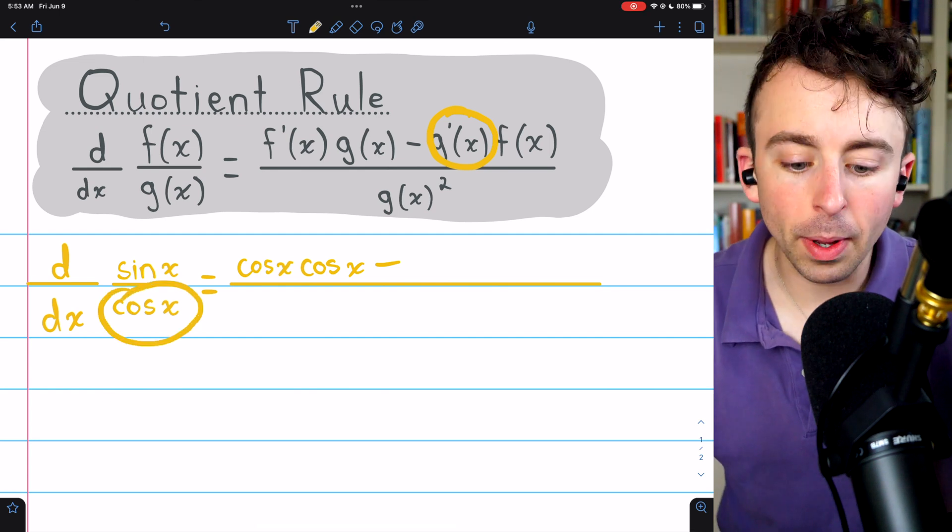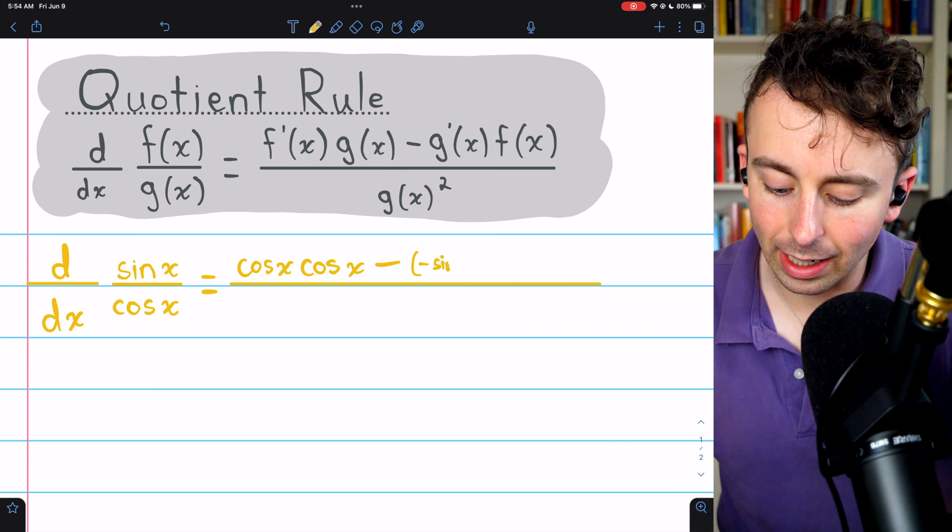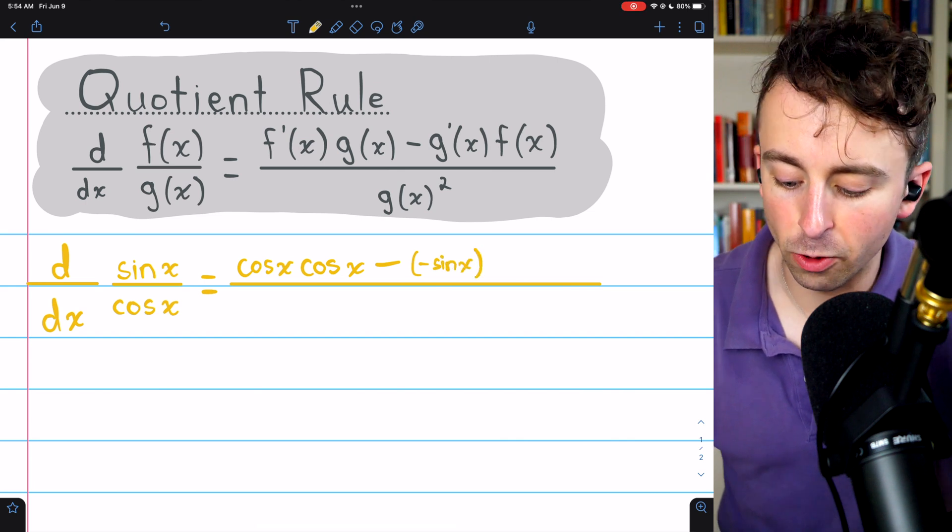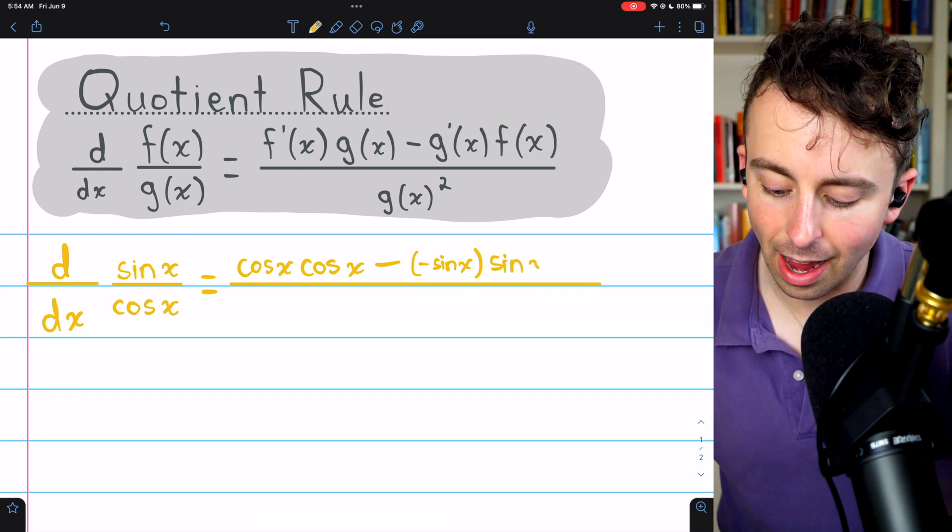That's the derivative of the denominator, the derivative of cosine. The derivative of cosine is negative sine x. So there is our g prime, and we multiply that by f(x), which is the numerator. That's sine of x.